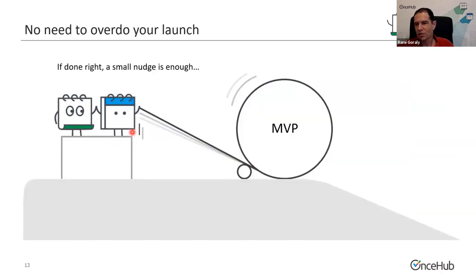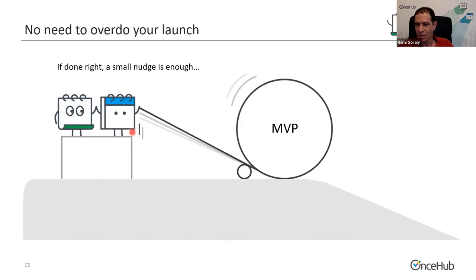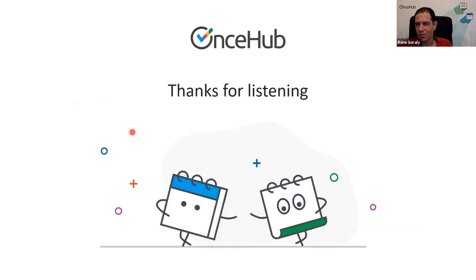The last thing — once you've checked all the boxes, you just need to launch. You don't need to spend too much time on this. In product-led, you want the product to sell itself, so all you need is a small nudge. If you've done everything right, it should start rolling and sell itself. Investing in a big launch may help in the short term with more signups, but they will churn. Let it happen naturally with a very small launch. Invest in the product and everything we've discussed — that is what will bring success.